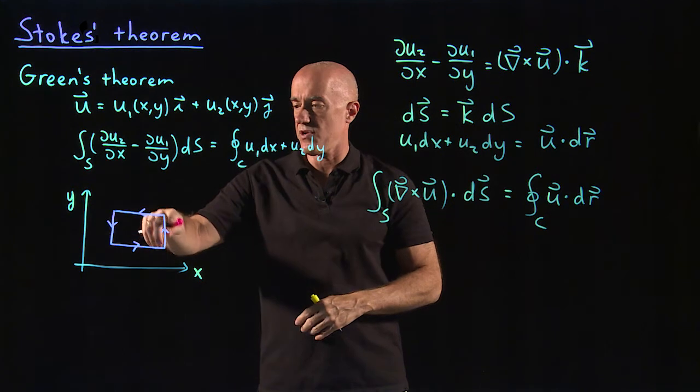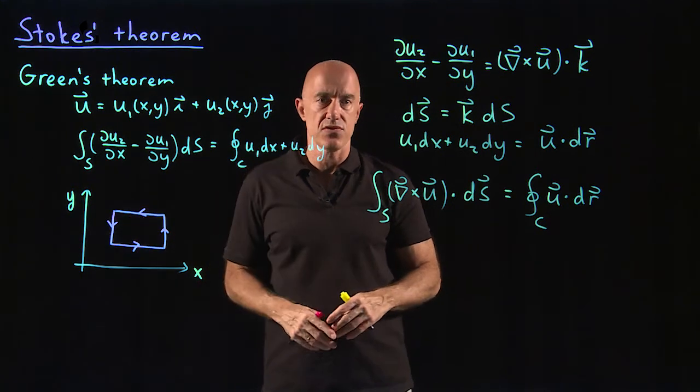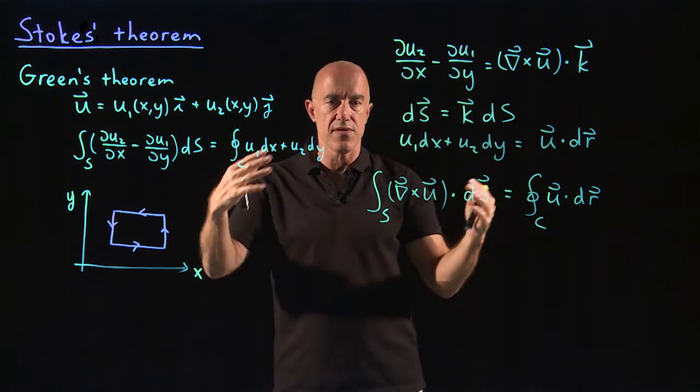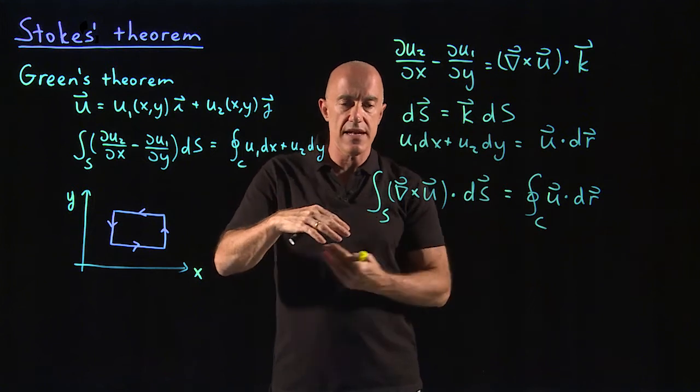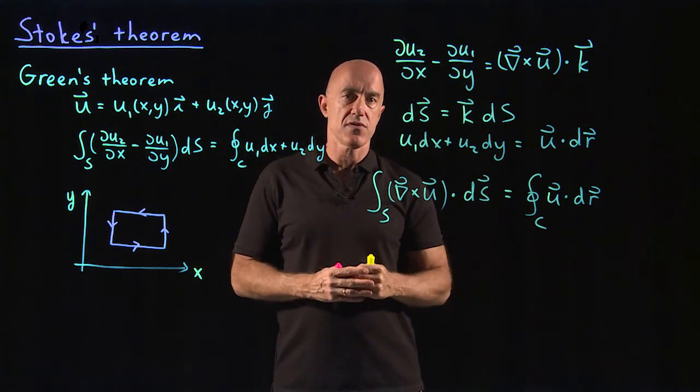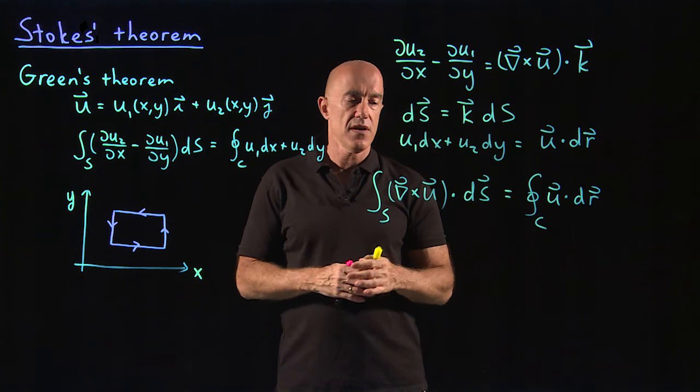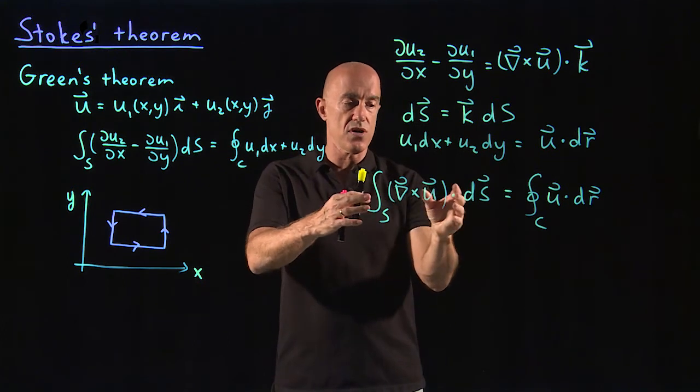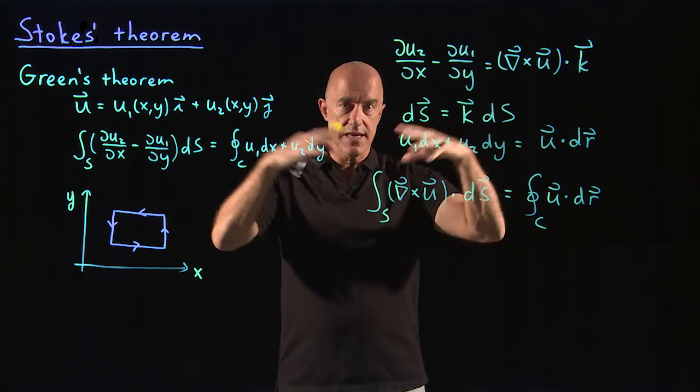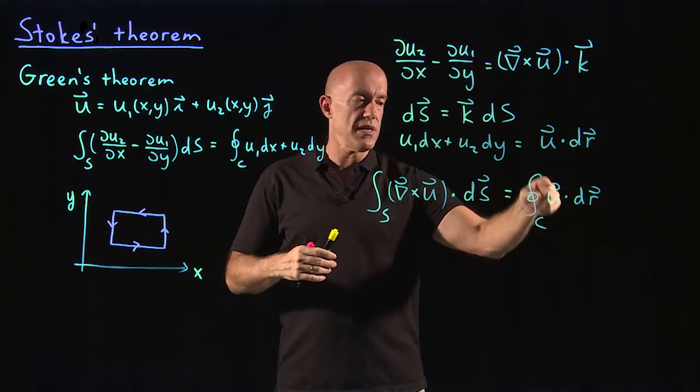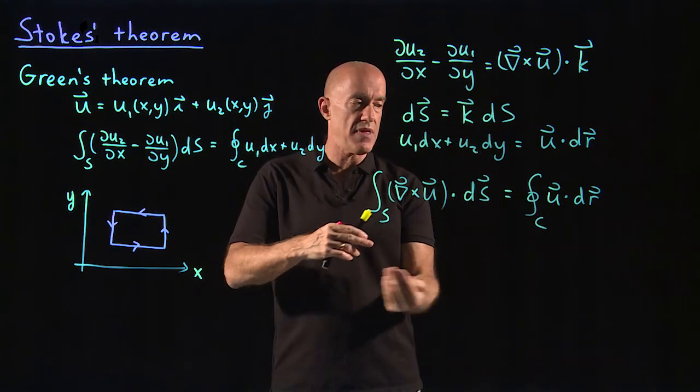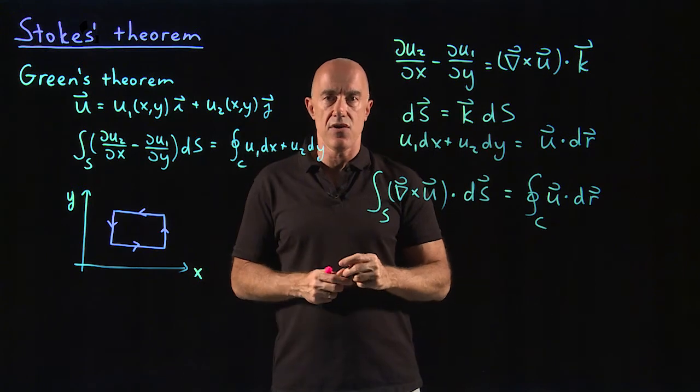In two dimensions we have a curve and the inside is the surface. Now the surface can be three-dimensional, but it has a lip which corresponds to the curve. So the integral of del cross u dot ds on the surface equals the integral over that lip, that curve, u dot dr.